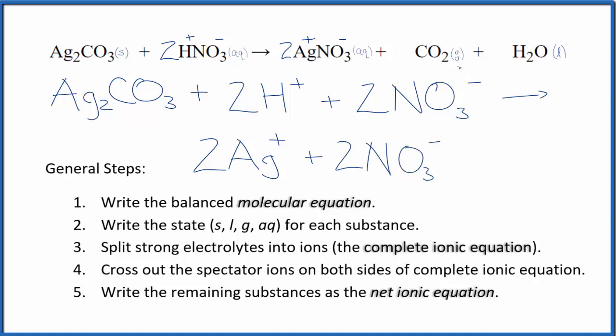And then we don't split gases or liquids apart in net ionic equations. So we'll have our carbon dioxide gas, and then our liquid water, that H2O there. So this is what we call the complete ionic equation.